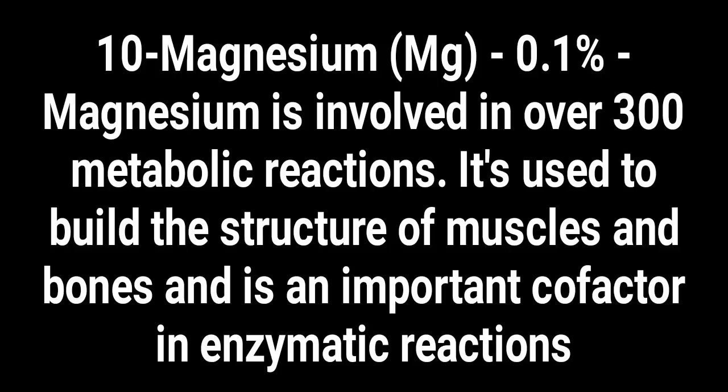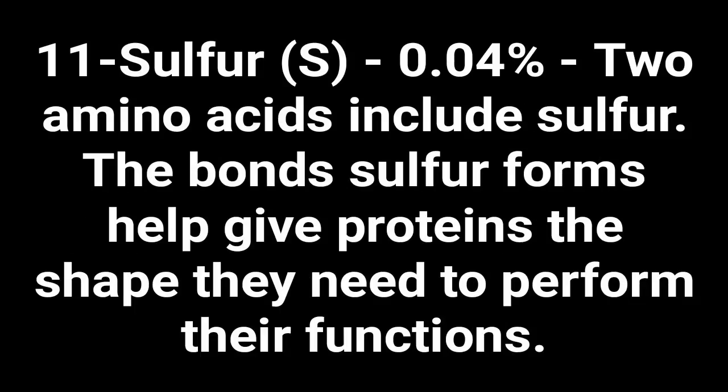Number ten: magnesium — 0.1 percent of the human body. Magnesium is involved in over 300 metabolic reactions. It is used to build the structure of muscles and bones and is an important cofactor in enzymatic reactions.